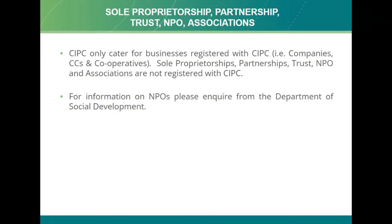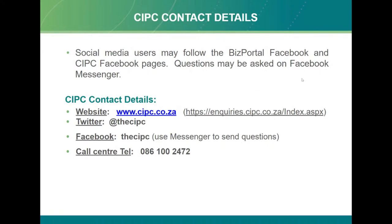CIPC only registers non-profit companies, which receive a registration number. You can follow CIPC on Facebook and ask questions via Facebook Messenger. To contact CIPC, visit the website and click on inquiries to log tickets regarding processes or status queries. CIPC also has Twitter and Facebook accounts and you can contact the call centre on 086 100 2472.